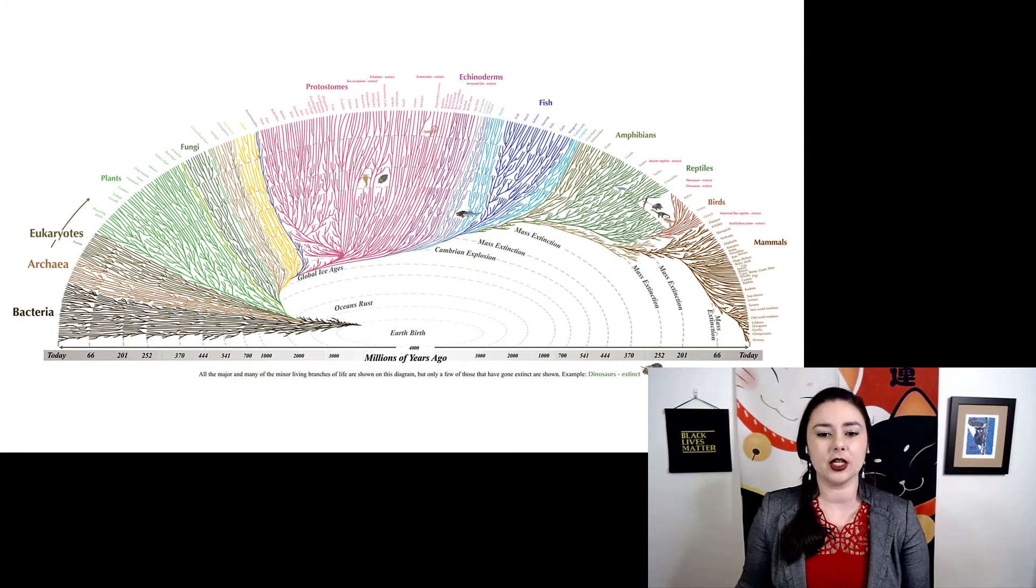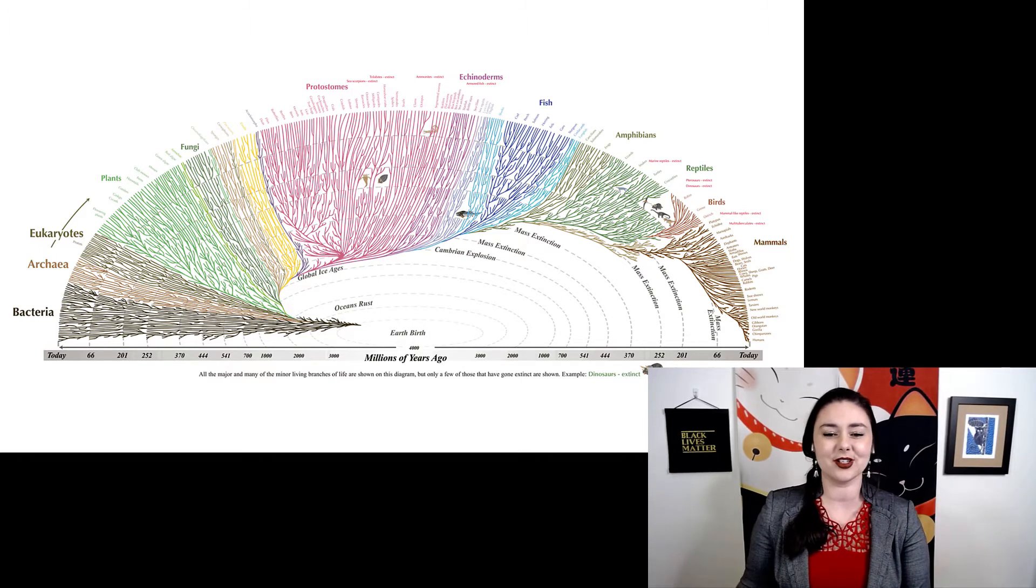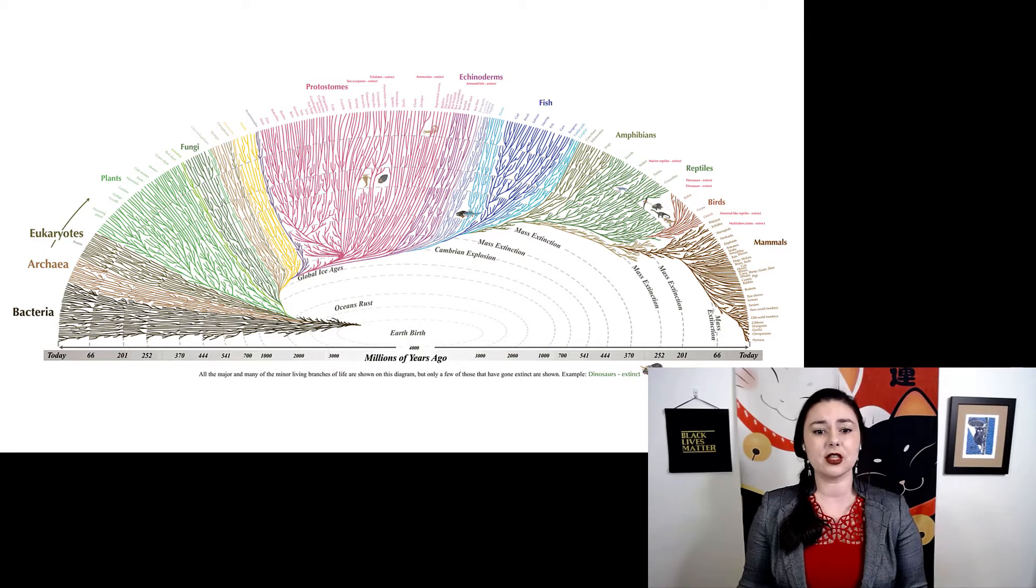Here's another fun one. So this is also a phylogenetic tree, but they have also included the age that each clade or each group existed. So you can see bacteria actually goes pretty far back to the beginning of life. Of course, not as early as the age of the earth, because the earth first had to exist for life to be there. And you can see archaea is also pretty old. Eukaryota is a little bit younger than that.